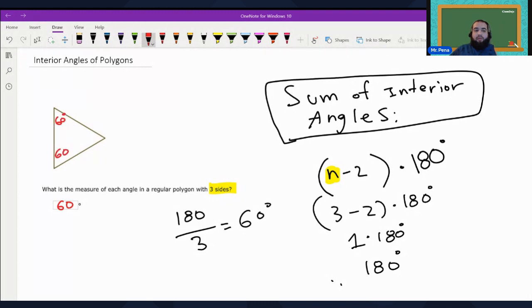You verify this by adding 60 plus 60 plus 60. And when you do that, you're going to get 180. That is the sum of each angle in a regular polygon with three sides.